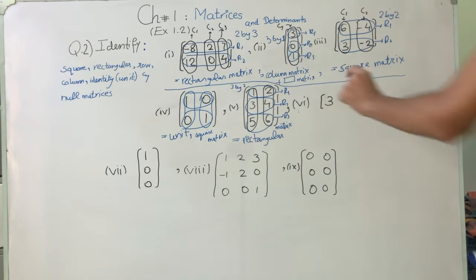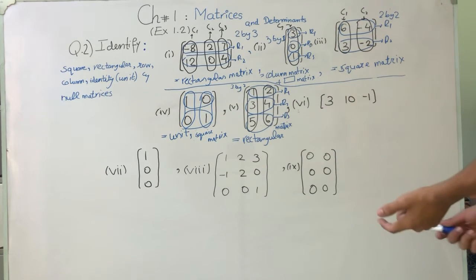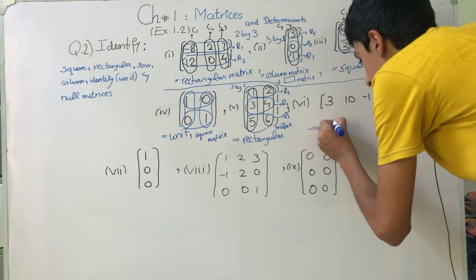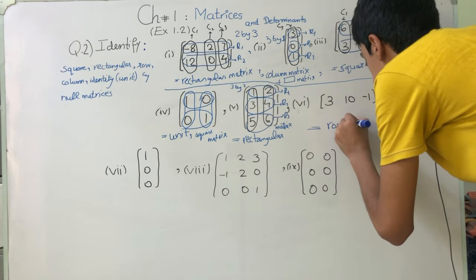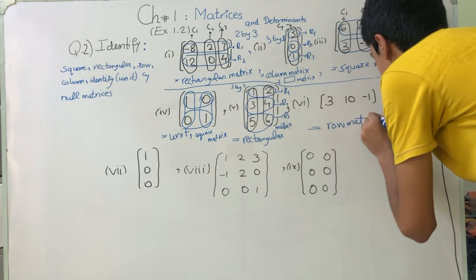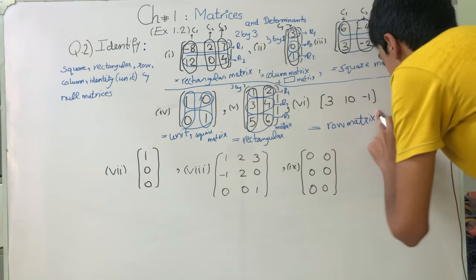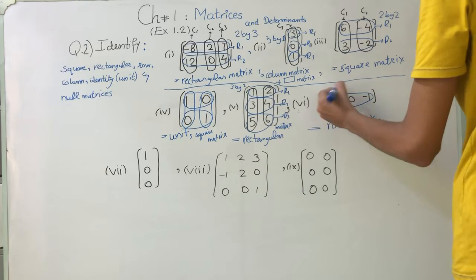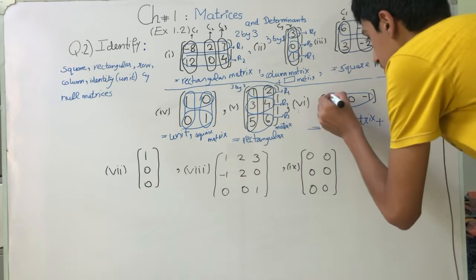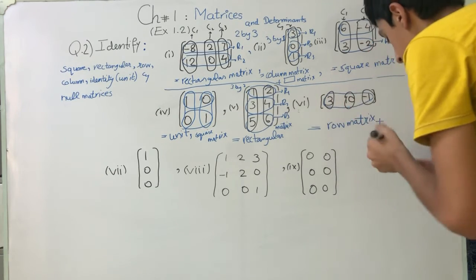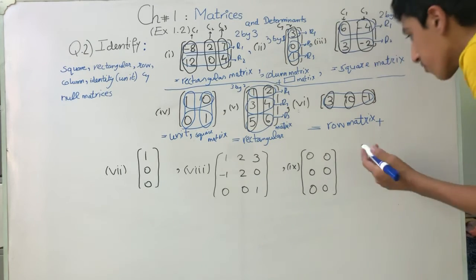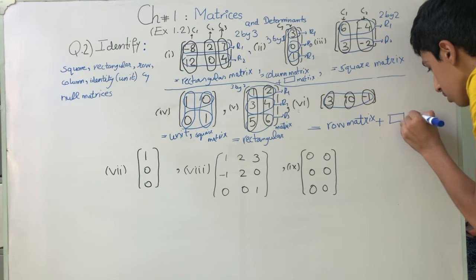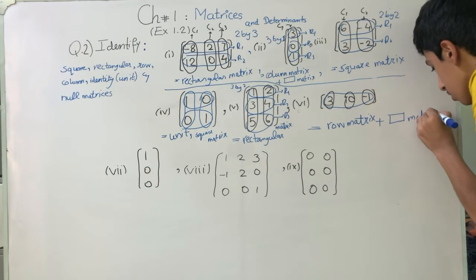In this matrix, there is only one horizontal row of entries, so we call it a row matrix. Checking rows and columns: this is 1 row and 3 columns — C1, C2, C3. The number of rows is not equal to the number of columns, and it has a rectangular shape, so this is also a rectangular matrix.